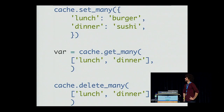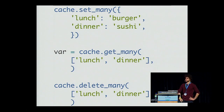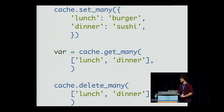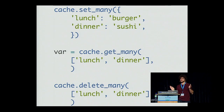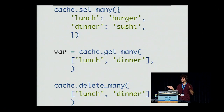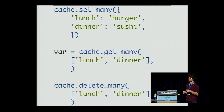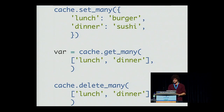You also get the `_many` counterparts of set, get, and delete. `set_many` takes a dictionary with keys and objects as values. `get_many` takes an array of keys, and `delete_many` takes an array of keys. You want to use those because when dealing with memcached, the slowest part is typically network latency — maybe 10 or 20 milliseconds. If you want to fetch 100 keys with `get_many`, you only pay that latency once. If you do 100 keys iteratively, you get 20ms times 100, which can get very slow, very fast.